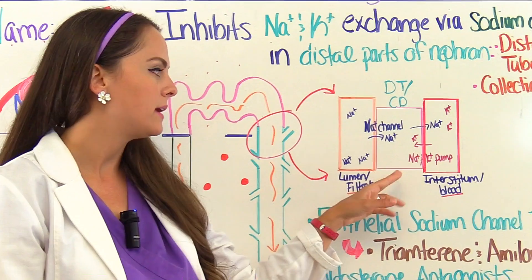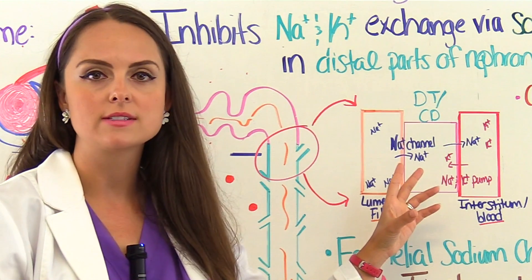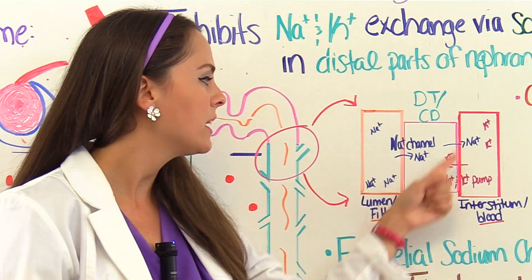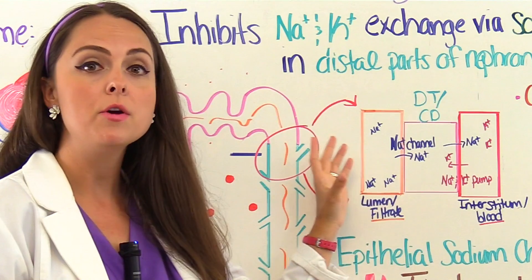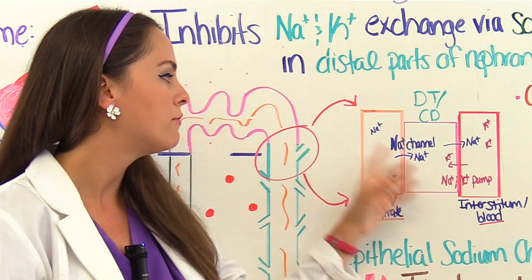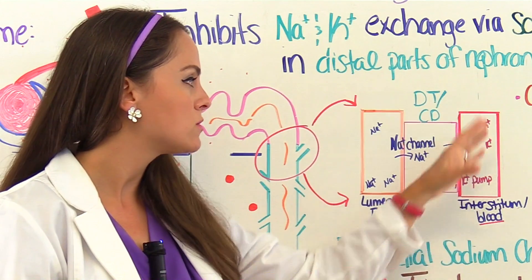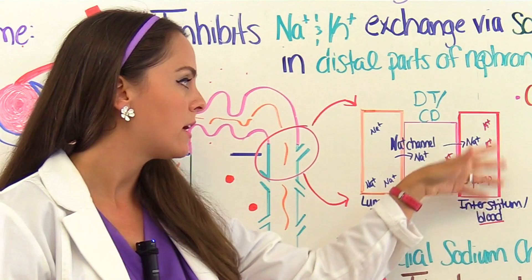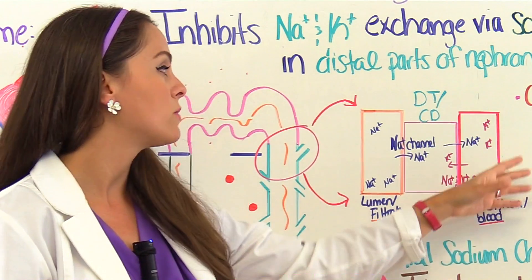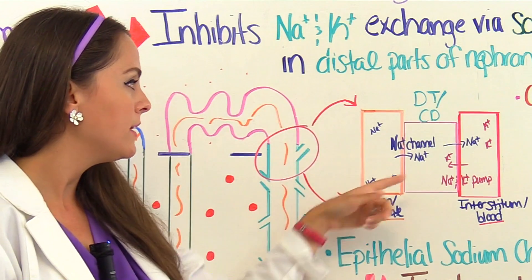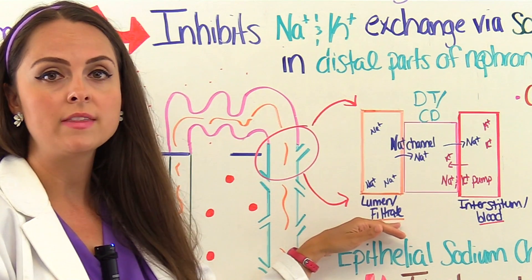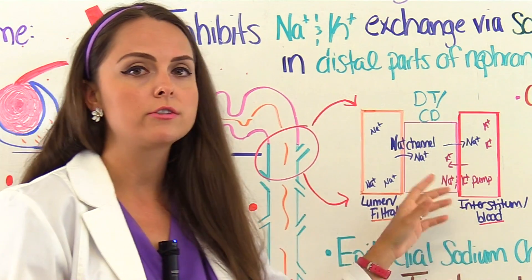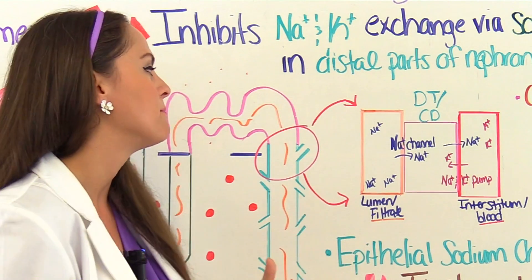Here we have an illustration. The middle area in pink represents the cells that make up the distal tubule and the collecting duct. Within these cells, you have channels and pumps to facilitate the movement of ions so they can cross back and forth. The red area represents our interstitium and blood, which has ions and other substances. Some of those substances want to get over to the filtrate. In orange is the lumen — the inside of the nephron and the filtrate — which also has ions that want to get over to the blood, requiring those channels and pumps.